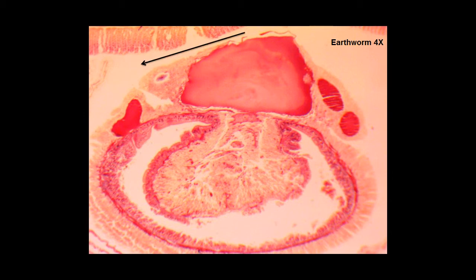The next part of the earthworm we're going to look at is the entire area around the digestive tract or intestine. This is called the coelomic cavity or coelom. It's the main body cavity filled with a fluid called coelomic fluid. The pressurized fluid in the coelom functions as a hydrostatic skeleton for the longitudinal and circular muscles to provide movement in this organism. The coelomic fluid is secreted by earthworms to facilitate its movement through the soil.